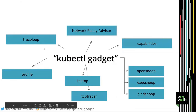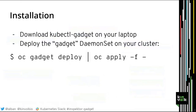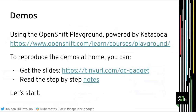In my talk I'll have a few demos of these different gadgets. If you want to try kubectl gadget or Inspector Gadget yourself, it should be easy to install on your laptop by downloading kubectl gadget and then deploying the gadget DaemonSet on your cluster using the OC gadget deploy command. Inspector Gadget is actually a kubectl or OC plugin. You can reproduce the demo using the OpenShift playground on Katacoda.